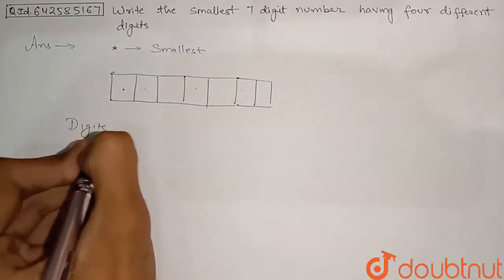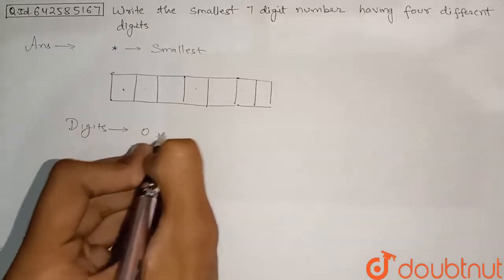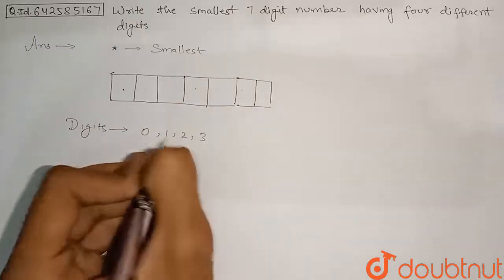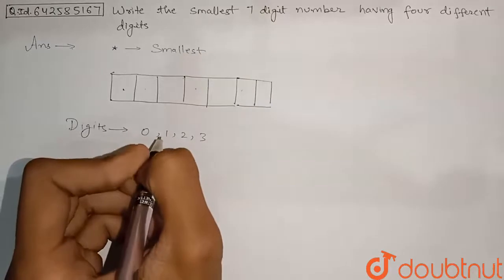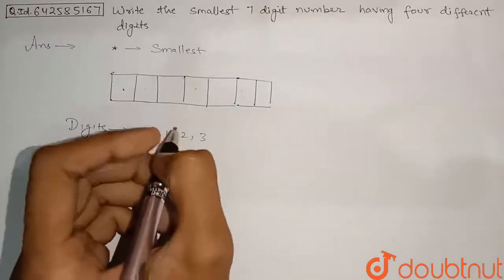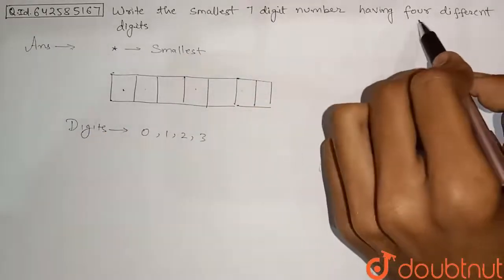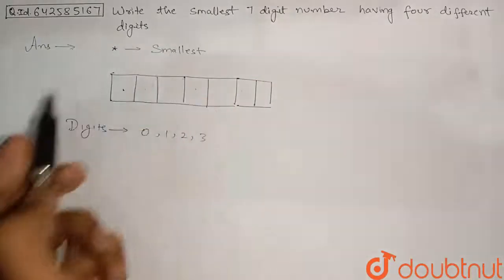So the digits will be, we can take 0, 1 and 2 and 3. Because all these are the smallest digits. Smallest 4 different digits we can save, because we have to just take 4 different digits here written in the question.